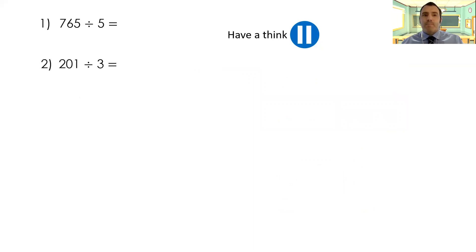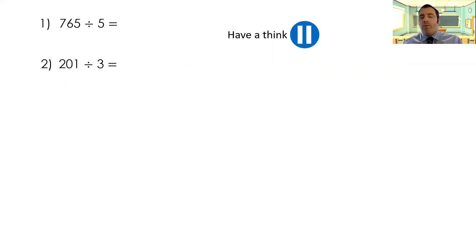Your turn. Have a go with these ones. Try partitioning and use your area model as well — have a go with both and see which method works best for you. If you're not sure of either method, go back, take these numbers with you, and work through the worked examples. Partition the numbers that you find nice and easy to use. Pause the video here to complete this.